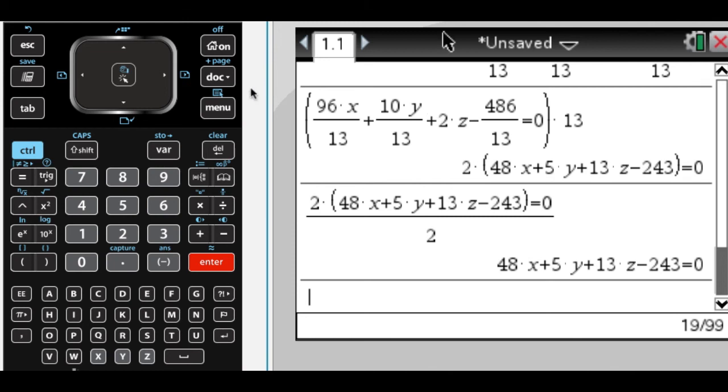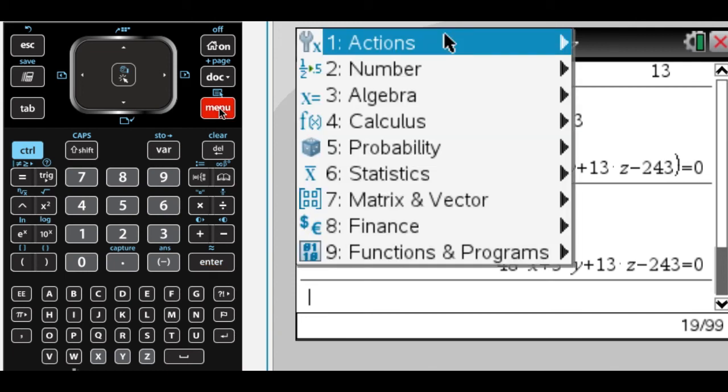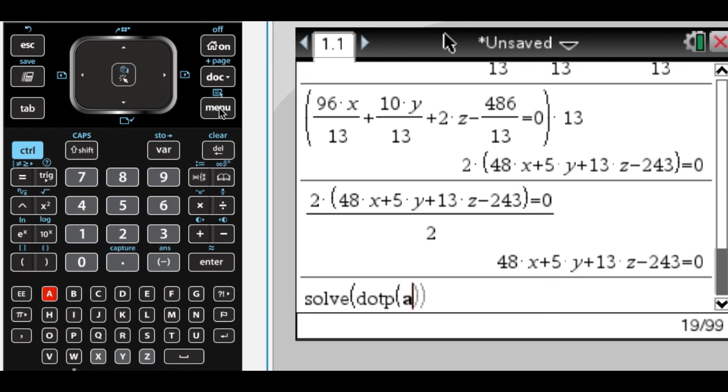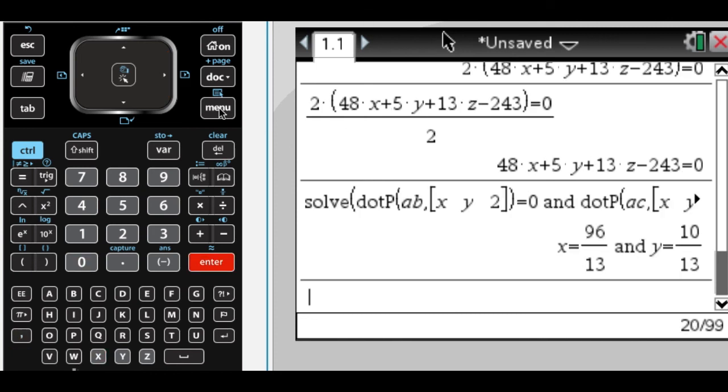Since I do have a CAS, what I would actually have done is this. So I would have to define N. So dot product of AB and (x, y, 2) equals 0 and dot product of AC and (x, y, 2) equals 0, comma X. And it gives me the values.